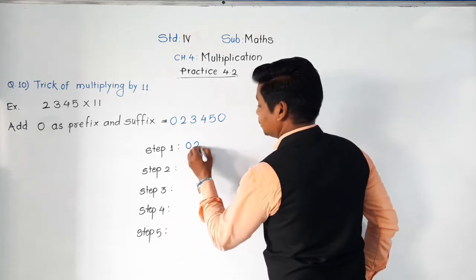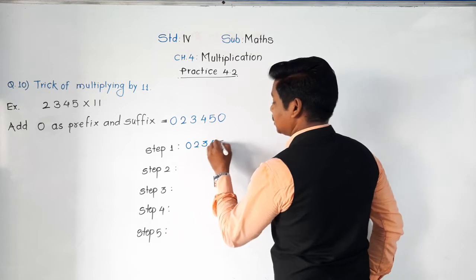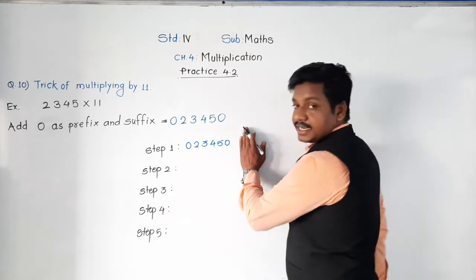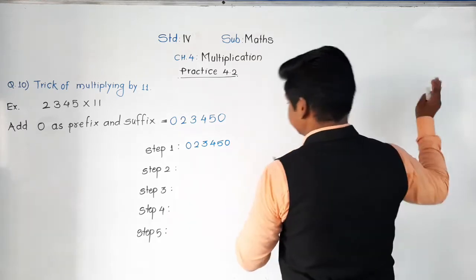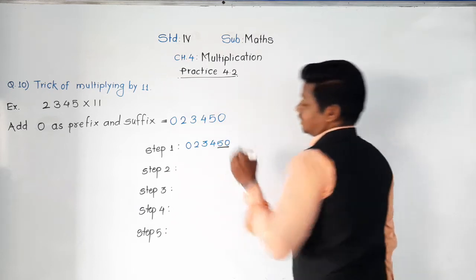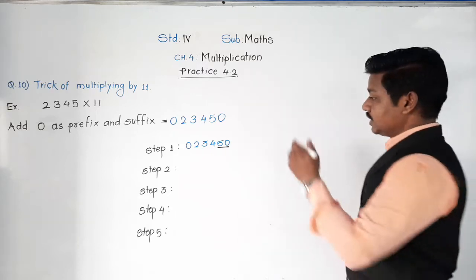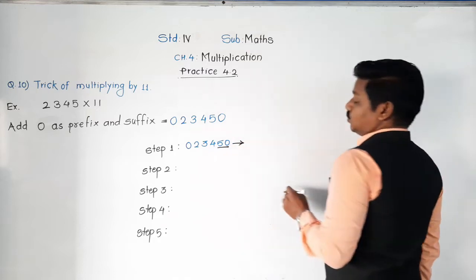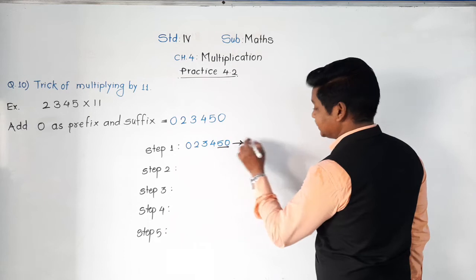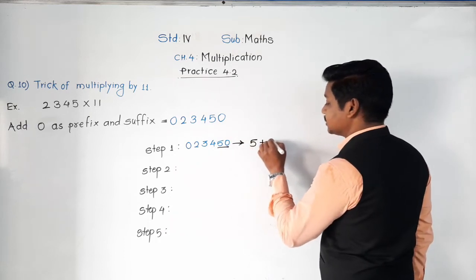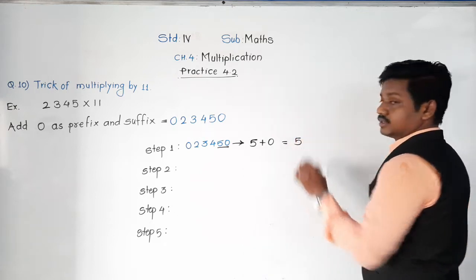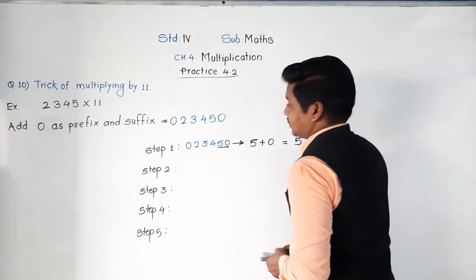Now, from the right side, starting from the ones place, make a group of two digits: underline 0 and 5. The two digits we have underlined, we have to add them. So 5 plus 0 equals 5. Write down 5 as the first digit of the answer.